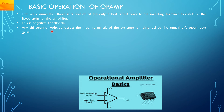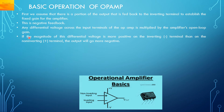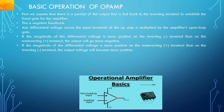Any differential voltage across the input terminals of the OPAMP is multiplied by the amplifier's open loop gain. If the magnitude of this differential voltage is more positive on the inverting terminal compared to the non-inverting terminal, then the output will go more negative. And vice versa, if the magnitude is more positive on the non-inverting terminal, the output voltage will become more positive.